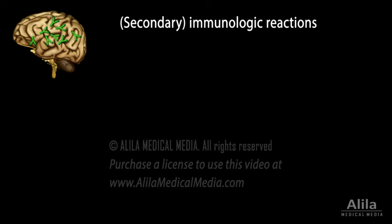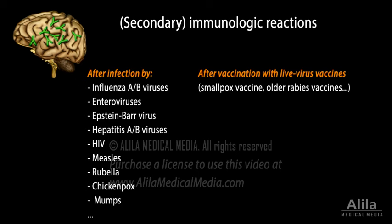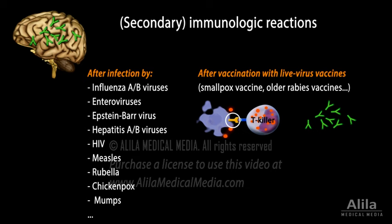Autoimmune encephalitis usually occurs as a secondary immunologic complication several weeks after certain infections or vaccinations. In this case, the immune system produces immune cells or antibodies against some brain proteins that resemble the proteins of the infectious agent.